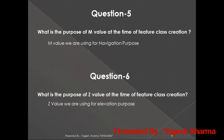What is the purpose of the M value at the time of feature class creation? Whenever we are creating a feature class, we get two options: enable M value and Z value. We use the M value when we are going to create a feature class for navigation purposes. The Z value is enabled whenever we create feature classes that require elevation information — essentially, enabling Z value is for creating 3D models or performing 3D analysis.